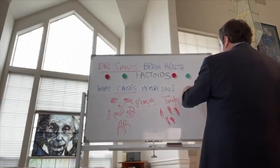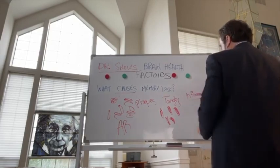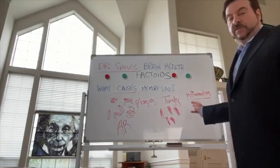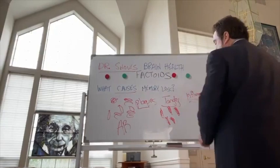And the third thing that occurs in memory loss is neuroinflammation. Neuroinflammation is also a big problem. If you have plaques and tangles and neuroinflammation, you will get dementia. So plaques, tangles, and inflammation.